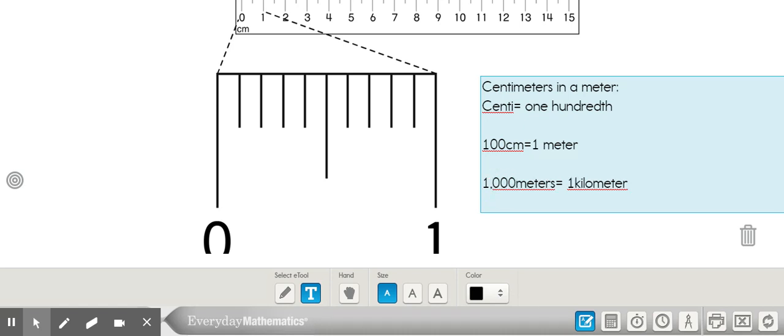As we think about that conversion, centimeters are smaller than a meter, meters are smaller than kilometers. So one kilometer equals a thousand meters. Keep these conversions in mind as we continue to discuss measurement in this unit. Thanks for listening.